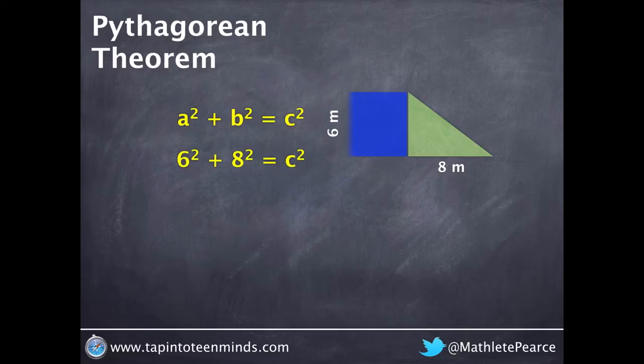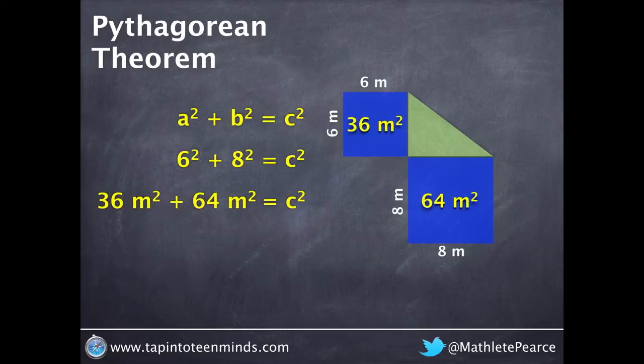Squaring 6 gives us a 6x6 square, and squaring 8 gives us an 8x8 square. Or, alternatively, an area of 36m squared and 64m squared, respectively.